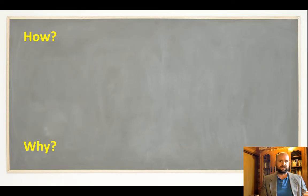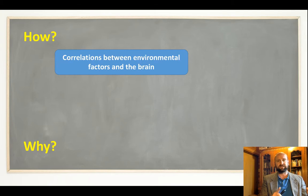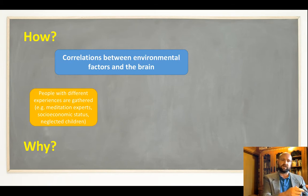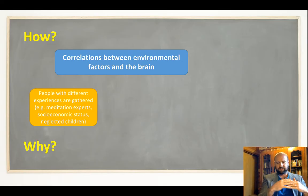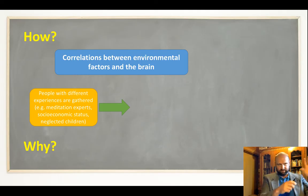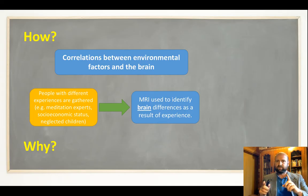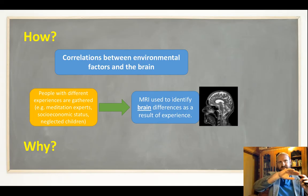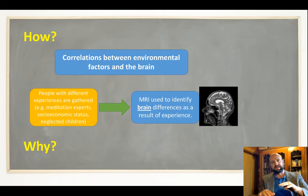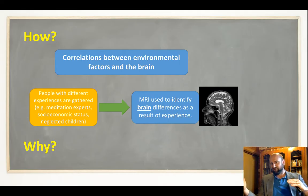There's also another way MRIs are used: looking at correlations between environmental factors and the brain. Here we look at people with different experiences — maybe different levels of socio-economic status, different experiences with meditation, or for kids, different levels of neglect. Those are three different types of studies. We then use the MRI to actually measure differences in their brains — the size and shape of their hippocampus, prefrontal cortex, or other areas — and then we conduct correlations.